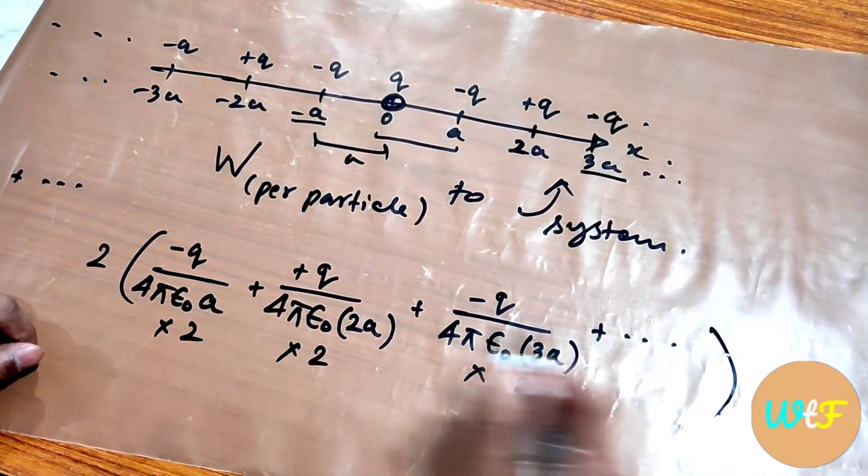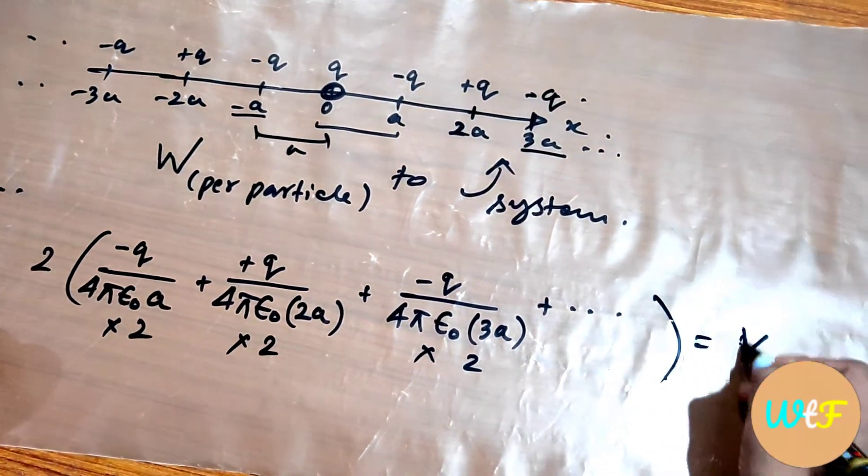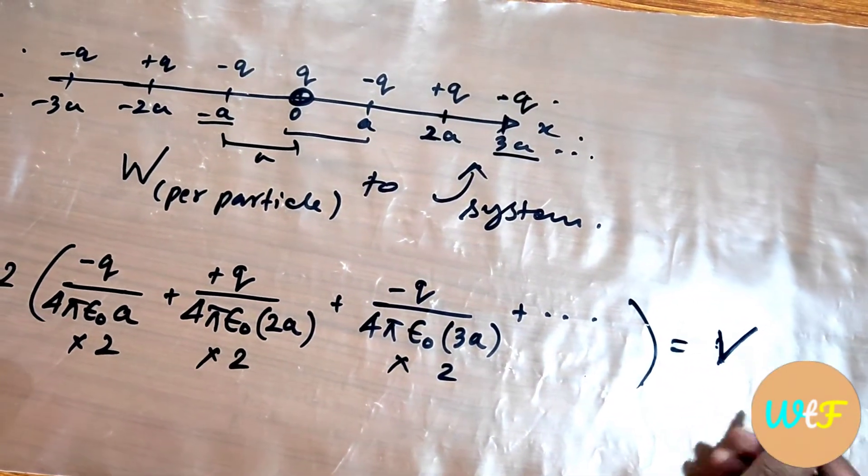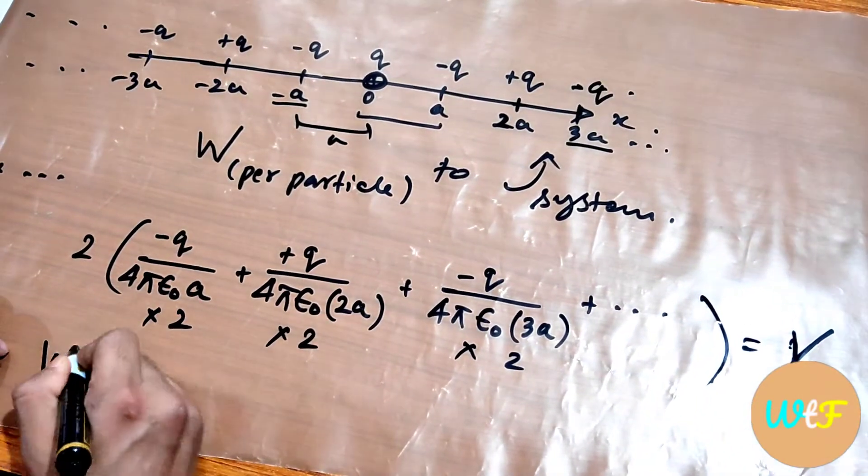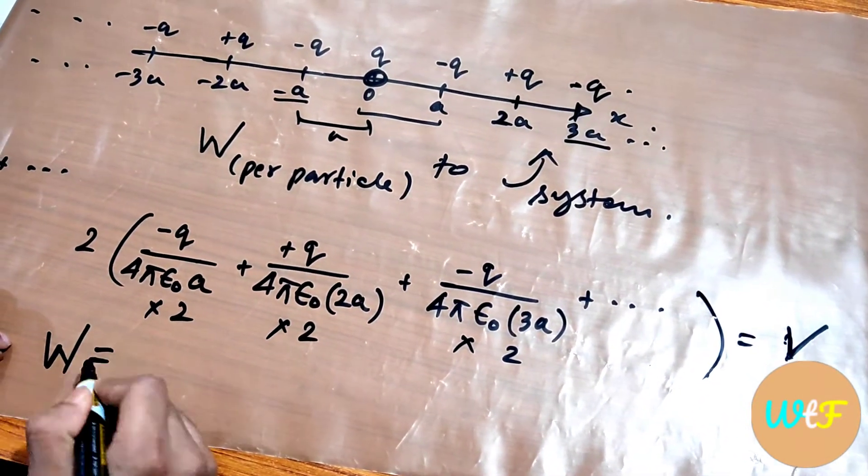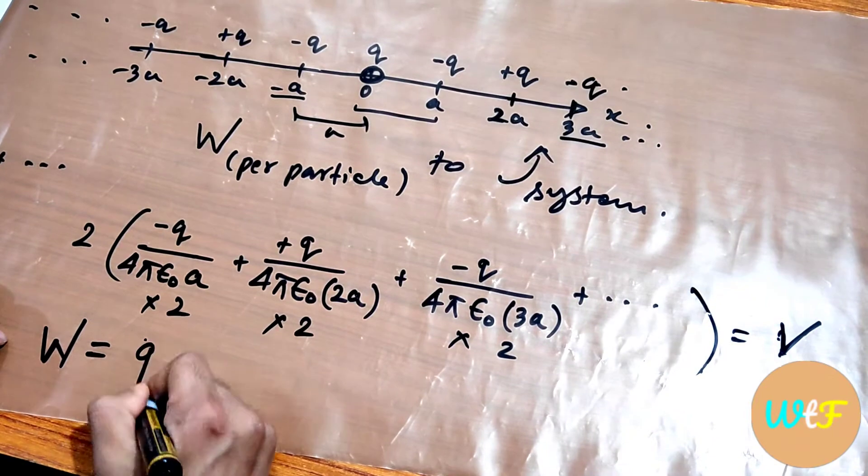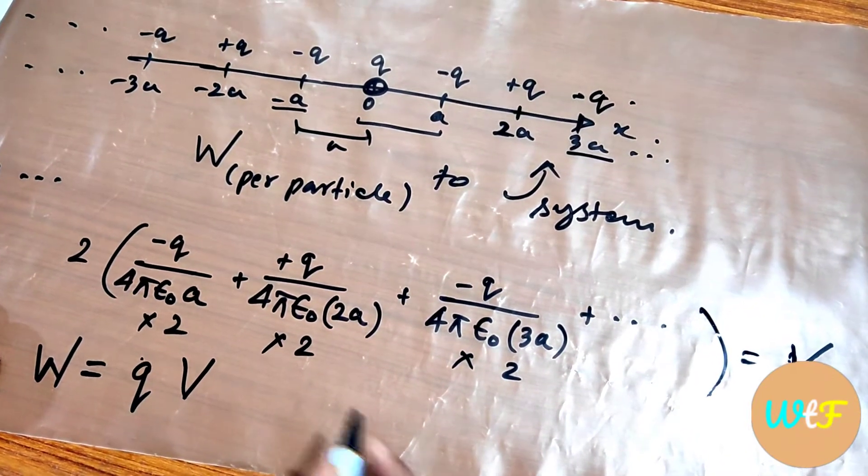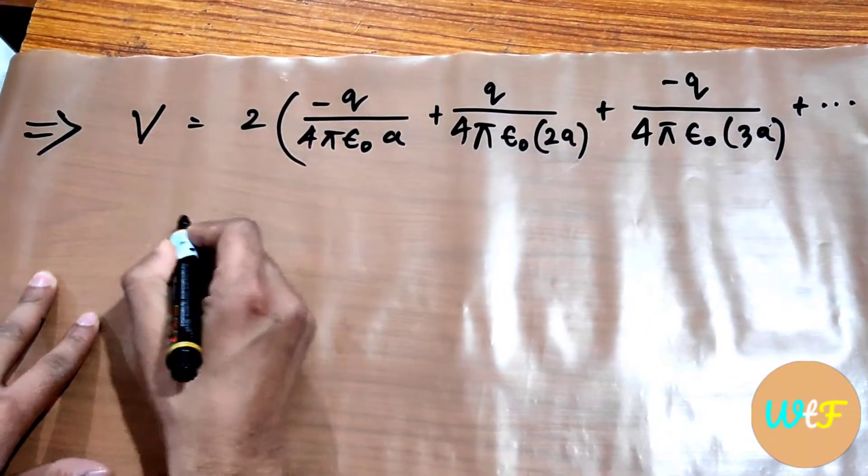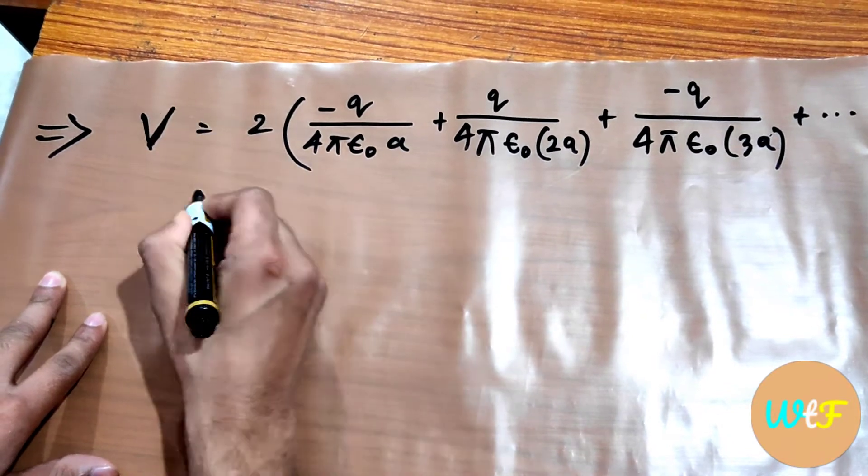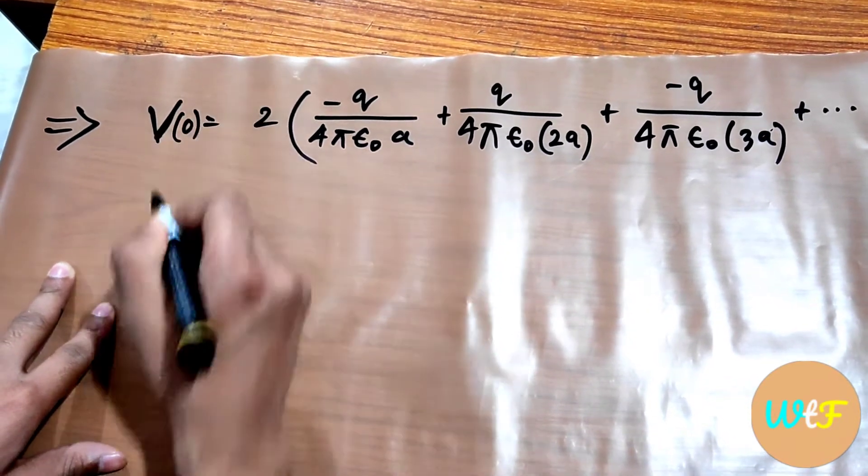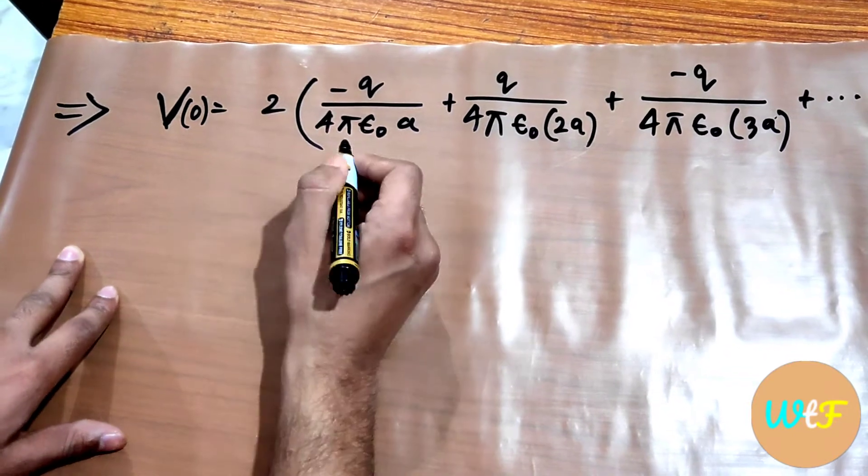And if this is potential, let's say V, then our answer will be work is equal to q into V. So let's evaluate V for origin, let's write O here for origin.